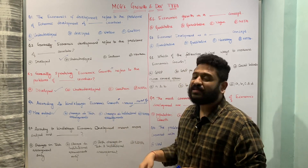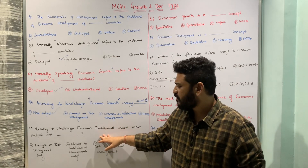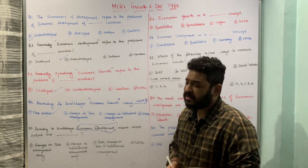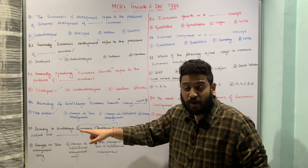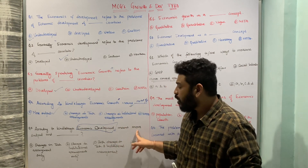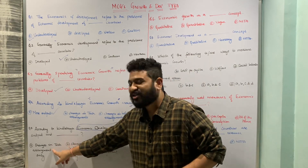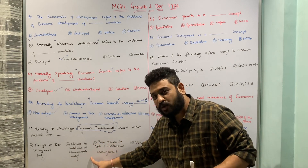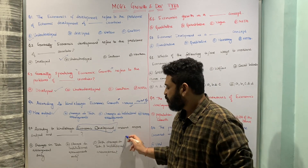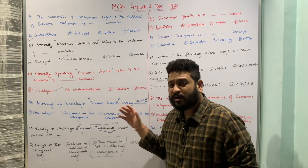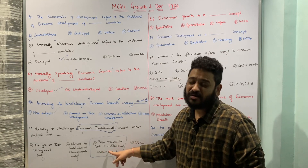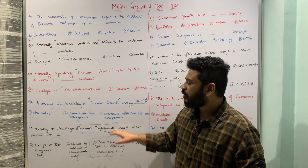The next question: 'According to Kindleberger, economic development means more output and ___.' While growth means only more output, development means more output plus changes. The options are: changes in technological arrangements only, changes in institutional arrangements only, both changes in institutional and technological arrangements, or none of the above. The correct answer is option C — both technological and institutional arrangements.